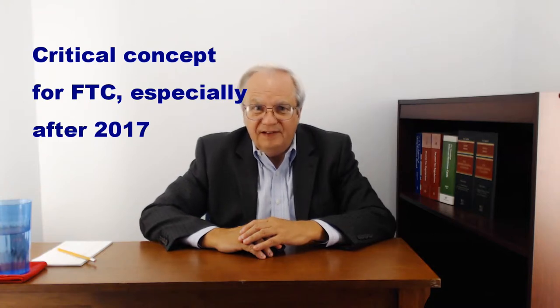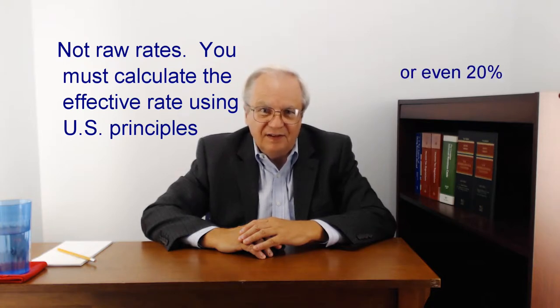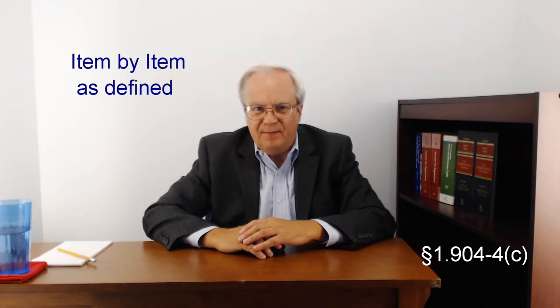One key thing you must remember is that it is not a comparison of raw tax rates. Just because a foreign tax rate is 40% doesn't mean you meet the high-tax exception, and just because it's 30% doesn't mean you failed to meet it. You have to always do the calculations, and they can be tough. The determination of whether something is subject to high foreign tax is made on an item-by-item basis, applying both U.S. and foreign rules. It applies only to items of passive income, and the only effect of the high-tax kickout is to change the particular item from passive basket to general basket.